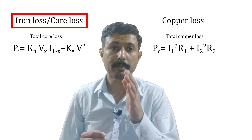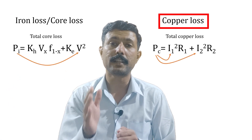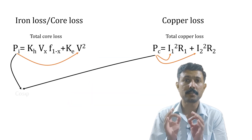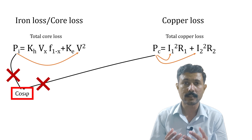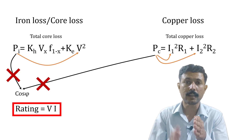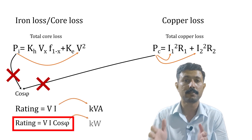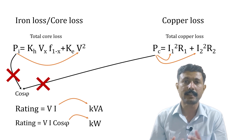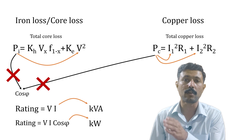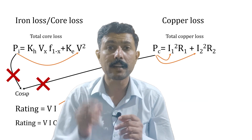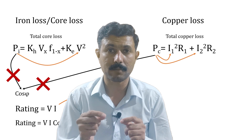There are many ways to understand this, but we are going to explore two of them. Starting with the most common explanation: the iron loss of a transformer depends on voltage, and the copper loss depends on current. Neither of these losses depends on the power factor, and that is why the rating becomes V and I only — not V·I·cos φ. That's why it is VA and not VA·cos φ.